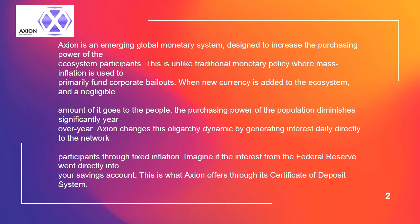The purchasing power of the population diminishes significantly year over year. Axion changes this oligarchy dynamic by generating interest daily directly to network participants through fixed inflation. Imagine if the interest from the Federal Reserve went directly into your savings account — this is what Axion offers through its certificate of deposit system.